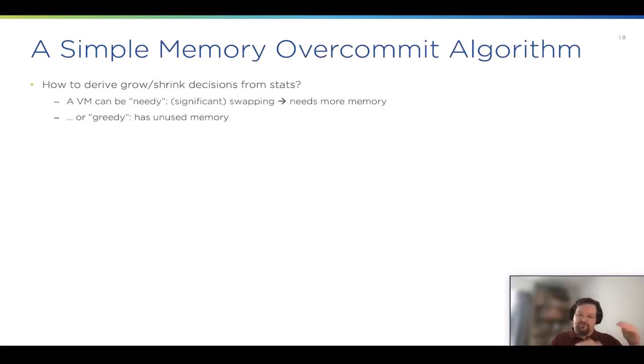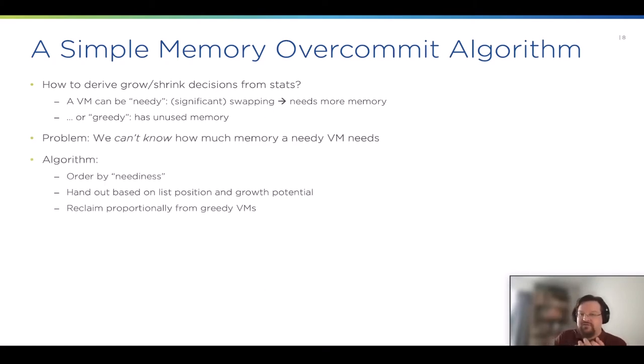Now we have ways to grow and shrink VMs and we have stats. Now comes the point where we tie these together into an algorithm. At a basic level, our algorithm works like this: we categorize VMs either as needy, which means there's some significant swapping going on and the VM needs more memory, or a VM can be greedy—that is, it's not swapping but has unused memory to give up. One problem is for greedy VMs, we have ideas of how much memory is reclaimable, but conversely we can't know how much memory a needy VM needs to stop swapping. It could be a little, could be a lot. So the best we can do is give it some memory, check whether that improved the situation, and if not, give it some more memory again.